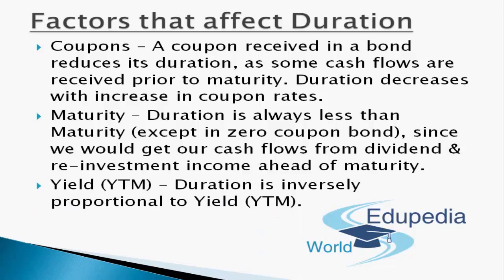The third factor is yield to maturity. Duration is inversely proportional to yield. As yield increases, coupons are reinvested at a higher rate, so the initial investment is recovered earlier — hence duration decreases. Conversely, when yield falls, duration increases.